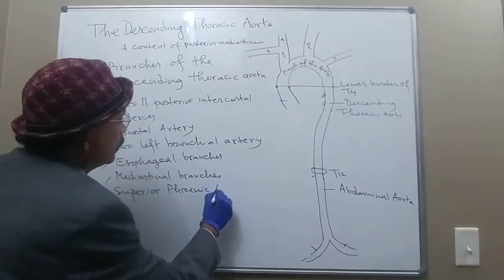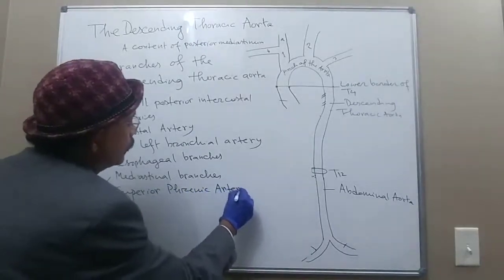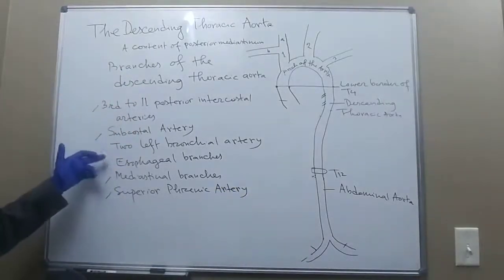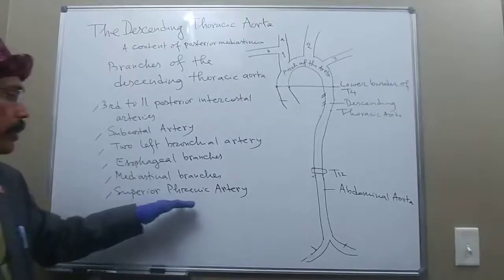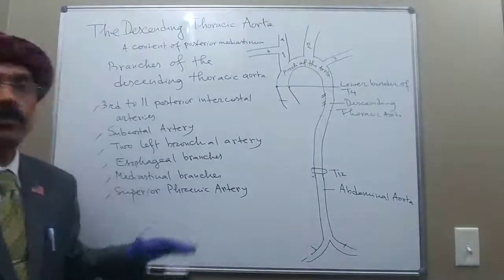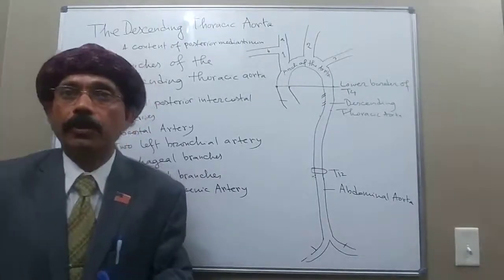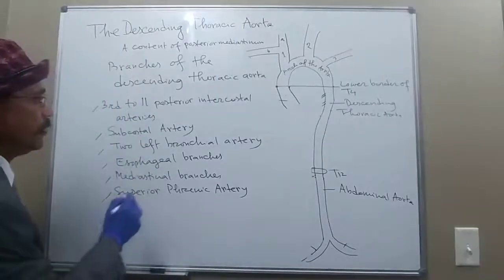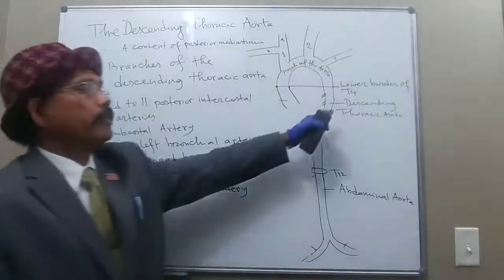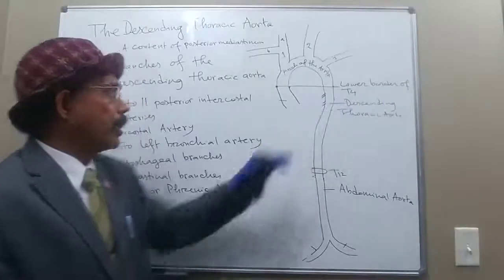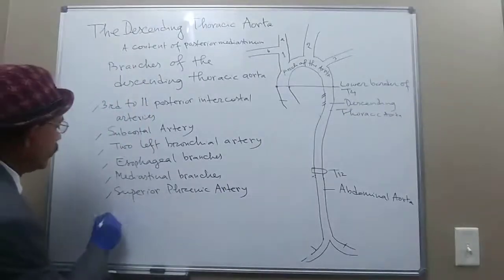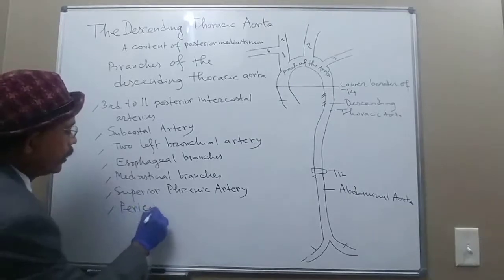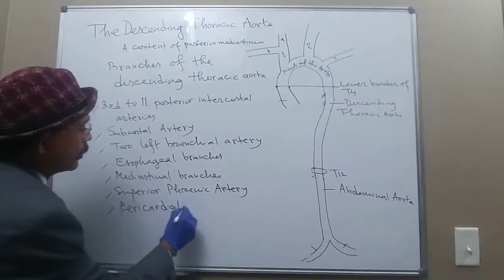The superior phrenic artery is a branch of the descending thoracic aorta. It supplies the upper part of the diaphragm. It is also related to the pericardium, so we get multiple pericardial arteries from the descending thoracic aorta as well.